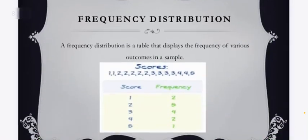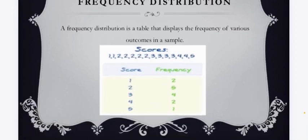Frequency distribution. Frequency distribution is a table that displays the frequency of various outcomes in a sample. So this is a sample question related to frequency distribution.